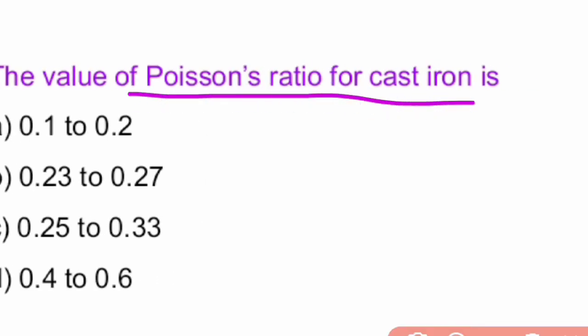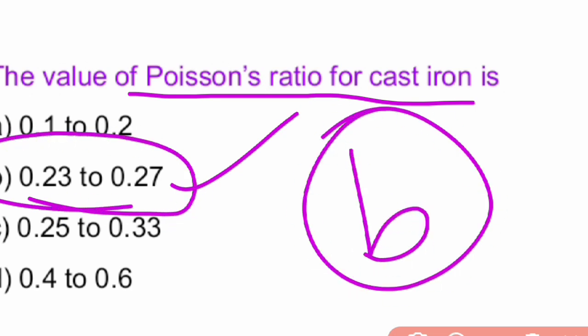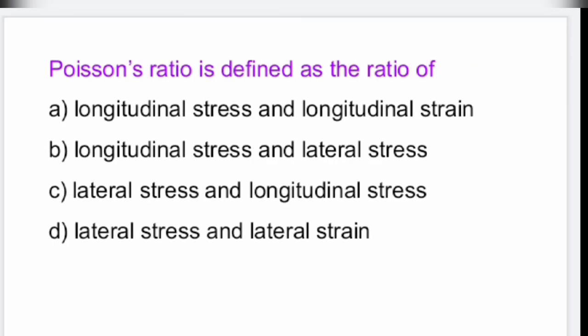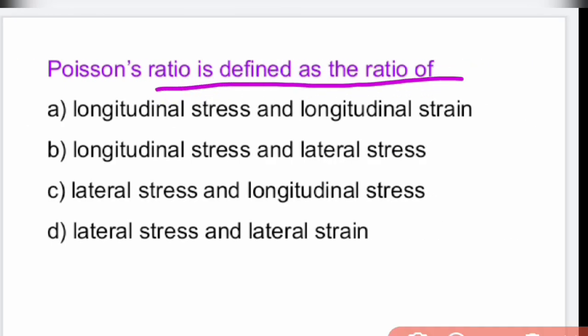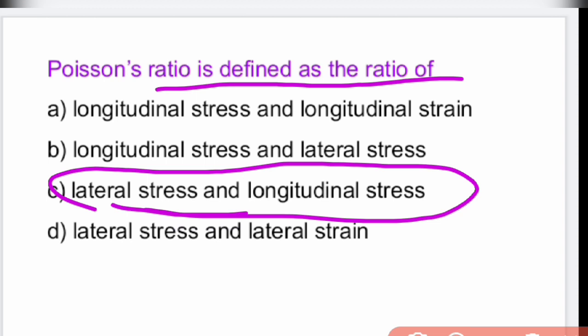The value of Poisson's ratio for cast iron lies between 0.23 to 0.27 — option B. Poisson's ratio is defined as the ratio between lateral strain and longitudinal strain.